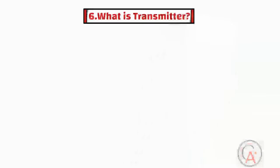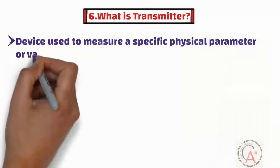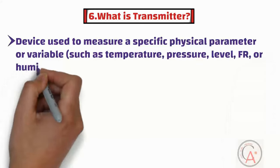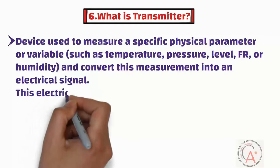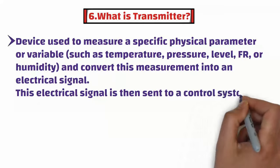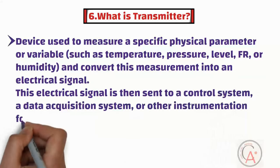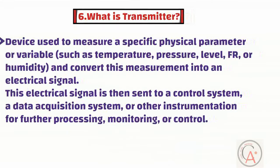The sixth question is: what is a transmitter? A transmitter, in the context of instrumentation and control systems, is a device used to measure a specific physical parameter such as temperature, pressure, level, flow rate, or humidity, and convert this measurement into an electrical signal. This electrical signal is then sent to a control system, a data acquisition system, or other instrumentation for further processing, monitoring, or control.